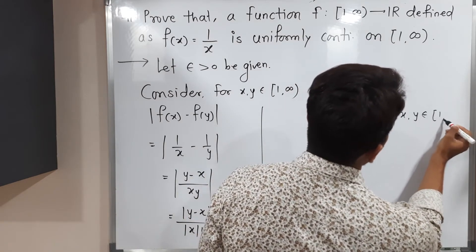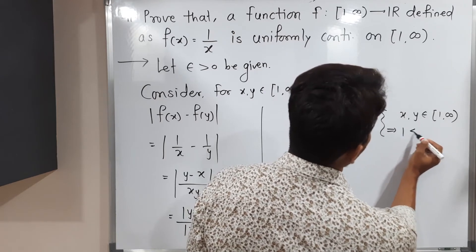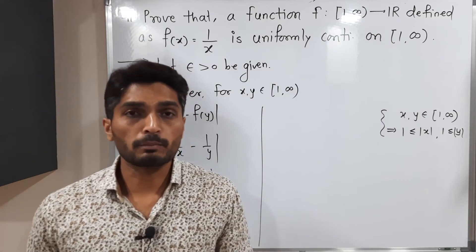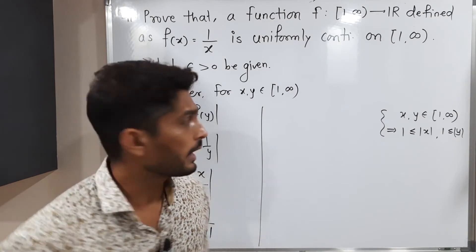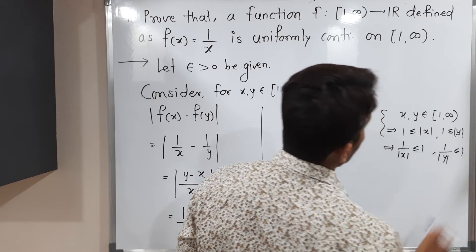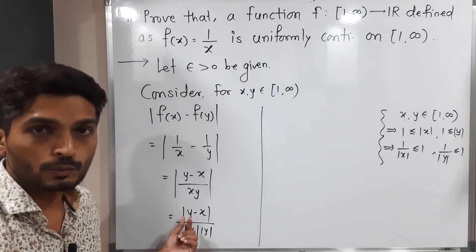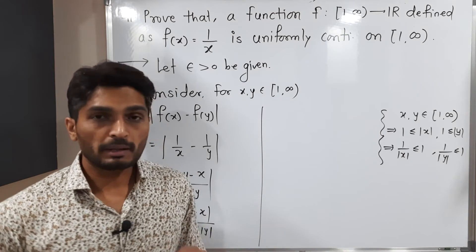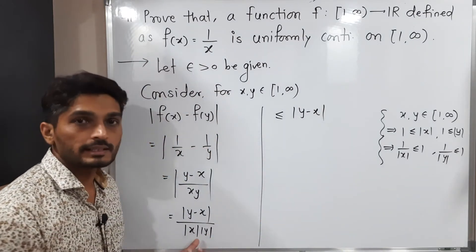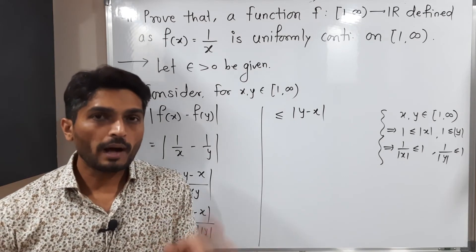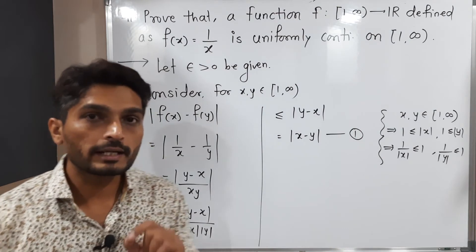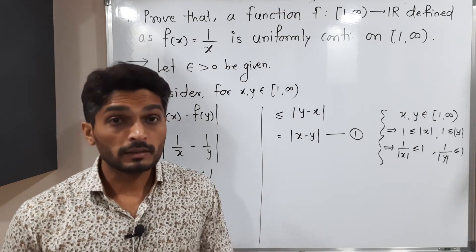Since x and y lie in [1, ∞), both of them are positive and their absolute values are greater than or equal to one. Taking reciprocals, 1/|x| ≤ 1 and 1/|y| ≤ 1. Therefore 1/(|x|·|y|) ≤ 1, so |f(x) − f(y)| ≤ |y − x| = |x − y|. This is a very important inequality — let us call it inequality number one — and now we have to select our delta.